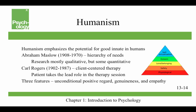Humanism emphasizes the potential for good that's innate in humans. Abraham Maslow came up with the hierarchy of needs: as long as basic needs for survival — physiological and safety needs — were met, higher-level needs would motivate behavior: love, belonging, esteem, and self-actualization. His research was mostly qualitative, finding people in history he felt were self-actualized. Carl Rogers developed client-centered therapy, treating people as clients rather than patients, with the patient taking the lead. The three features are unconditional positive regard, genuineness from the therapist, and empathy with the client's problems.